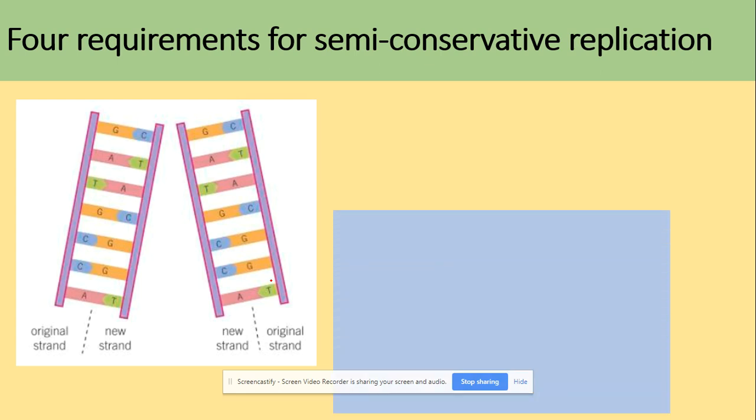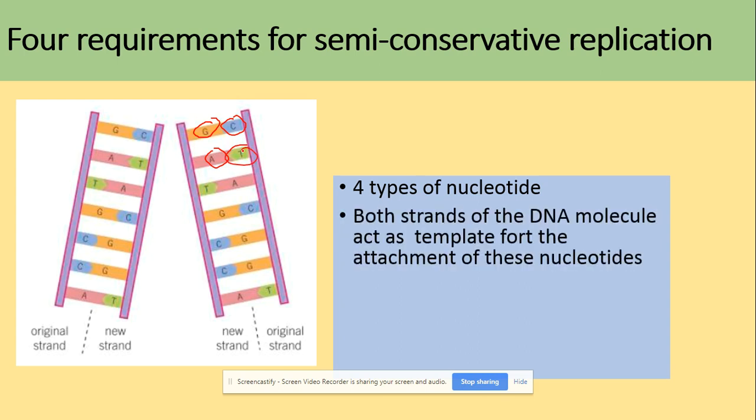The process of semi-conservative replication has four main requirements. First, there are four types of nucleotides: guanine, cytosine, adenine, and thymine. We need those nucleotides with those different bases.